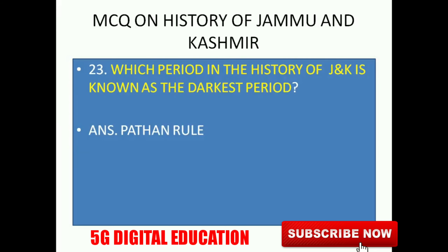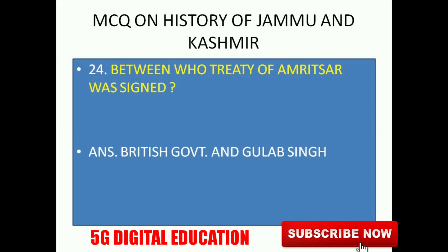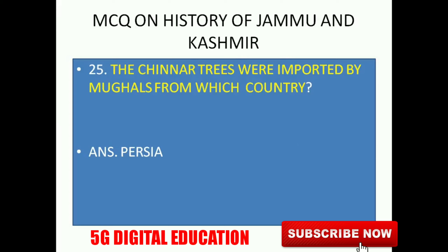Next: Which period in the history of J&K is known as the darkest period? The darkest period in J&K history was during the Pathan rule. Next: Between whom was the Treaty of Amritsar — also known as the Sale Deed of Kashmir — signed? It was signed between the British Government and Gulab Singh. Final question: The Chinar trees found in our state were imported by the Mughals from Persia.